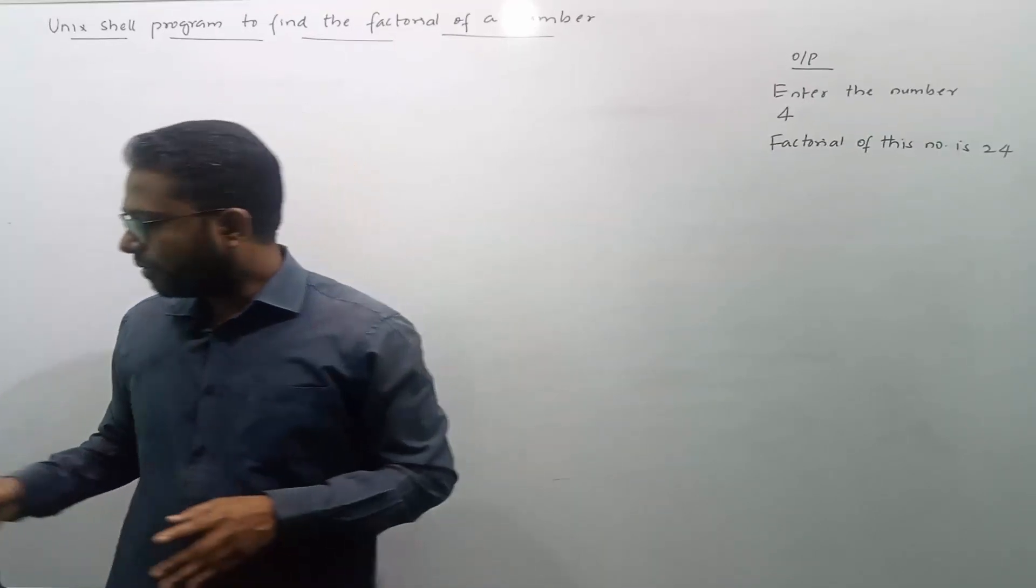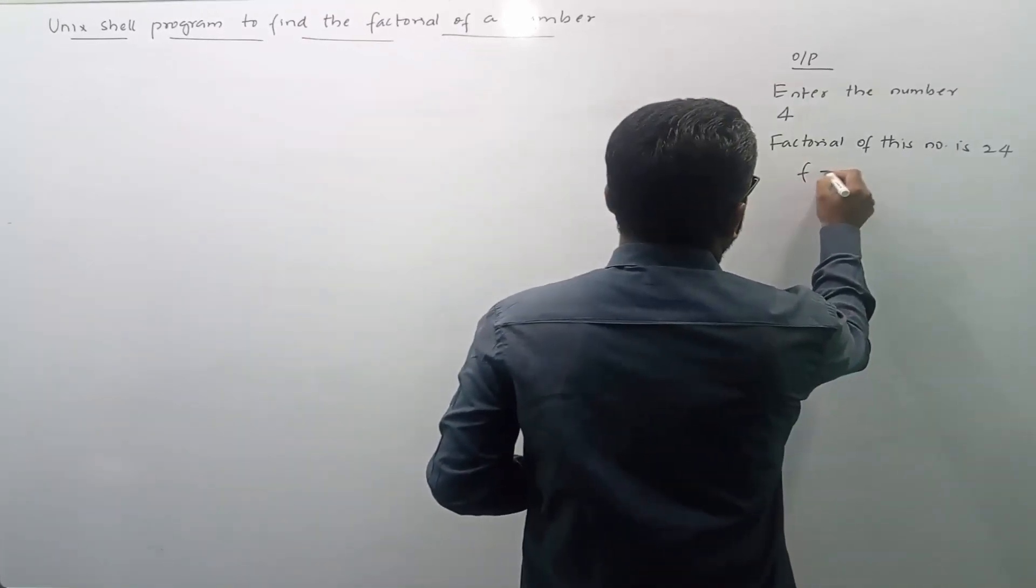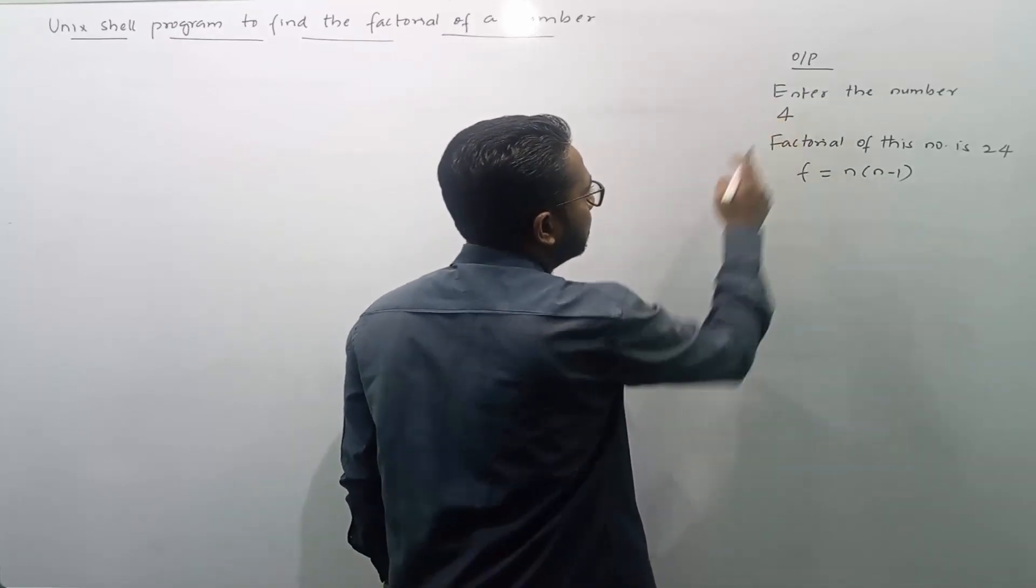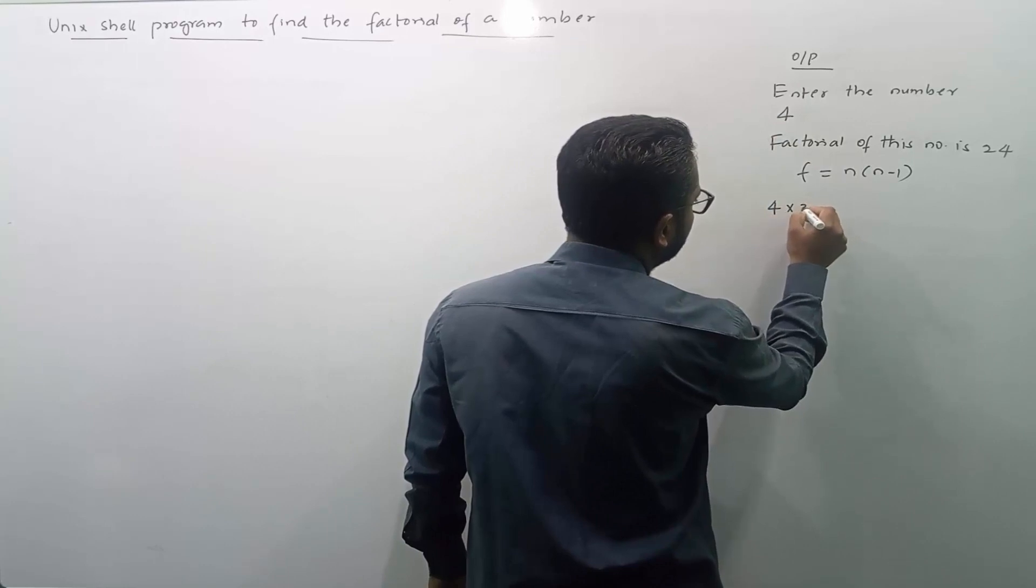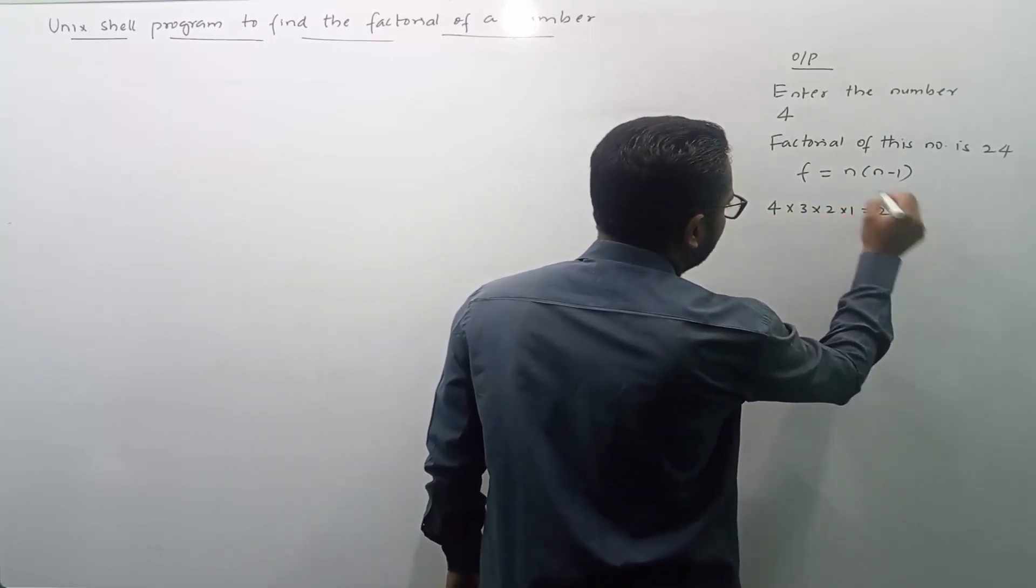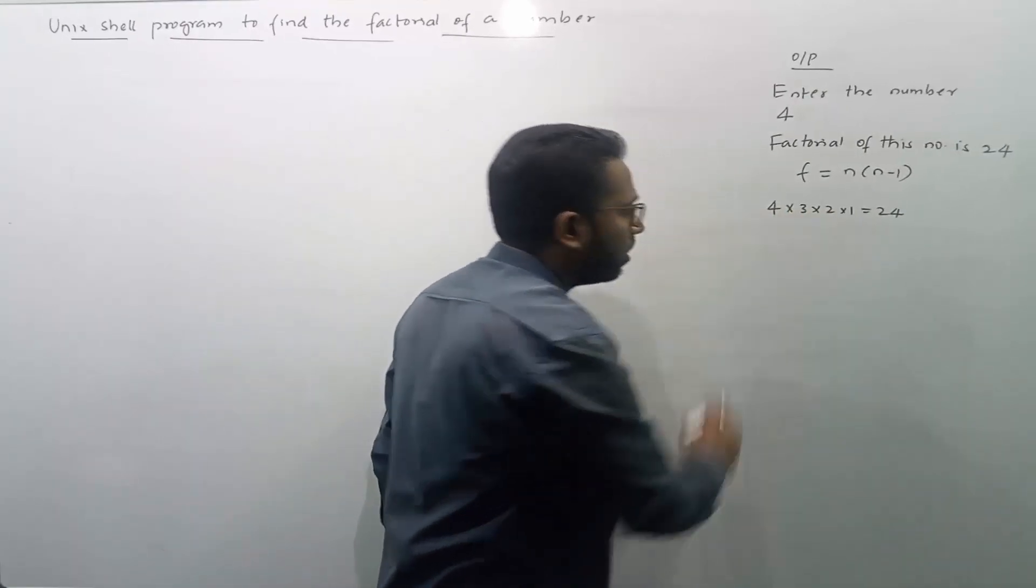So how we can write the program for this particular concept? The factorial of a number will be calculated based on the formula f equals to n into n minus 1. Here we have the input number 4, then we will do like this 4 into 3 into 2 into 1 and we will get 24. So in our program also we will be performing the same operation.